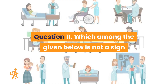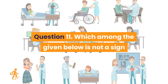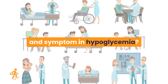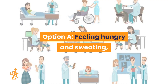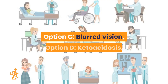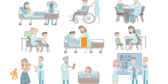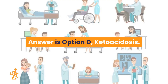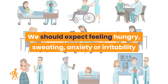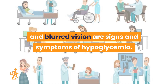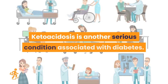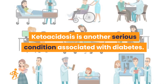Question 11. Which among the given below is not a sign and symptom of hypoglycemia? Option A: Feeling hungry and sweating. Option B: Anxiety or irritability. Option C: Blurred vision. Option D: Ketoacidosis. Answer is Option D: ketoacidosis. Feeling hungry, sweating, anxiety or irritability, and blurred vision are signs and symptoms of hypoglycemia. Ketoacidosis is another serious condition associated with diabetes.